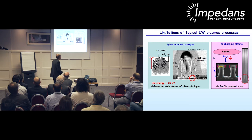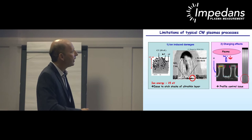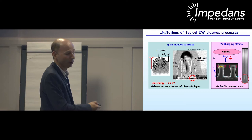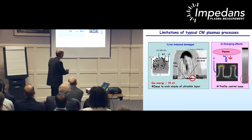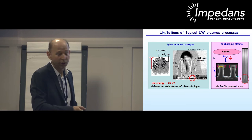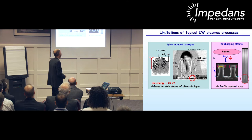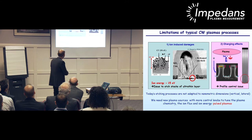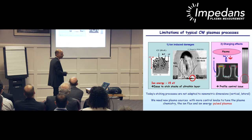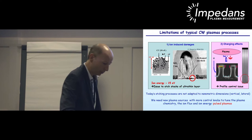Another limitation of CW plasmas is the well-known charging effects. They come from the fact that ion bombardment is perpendicular to the surface while electron bombardment is isotropic. As a result, the top of the features charges negatively while their bottom charges positively. Due to this differential charging, the ions are slowed down and deviated towards the sidewalls, leading to profile control issues such as bowing or notching. From these two examples, today's etching processes are not adapted to nanometric dimensions, and we need new plasma sources with more control knobs to tune plasma chemistry, ion flux, and ion energy. This is why we are interested in pulsed plasmas.